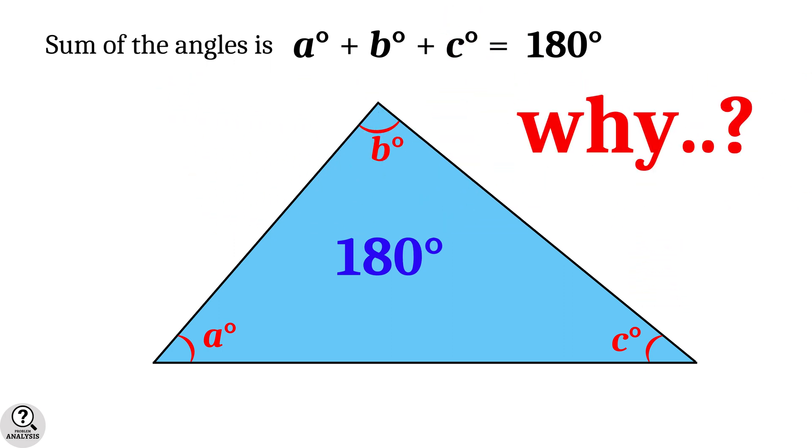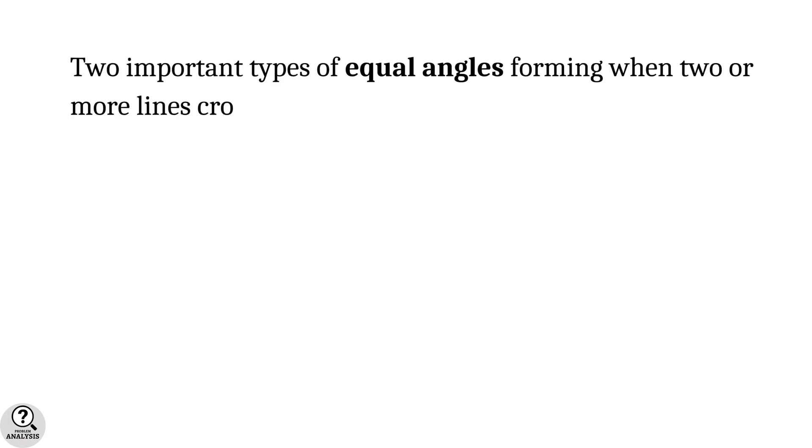But my question is, why? Why is it true for any triangle? Let's discuss. First, we have to recall two important types of equal angles forming when two or more lines cross each other: corresponding angles and opposite angles.